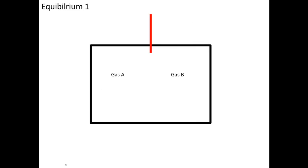So this is the first equilibrium. I want to ask you: why will both gases mix with each other? And why is it unrealistic that gas A still stays in the left container and gas B in the right container? The reason is that after we remove the partition, we get a new system here — a closed system. And within this new closed system, there exists a concentration gradient.